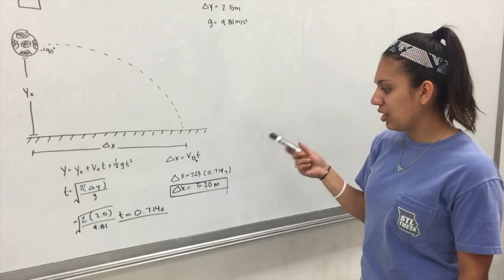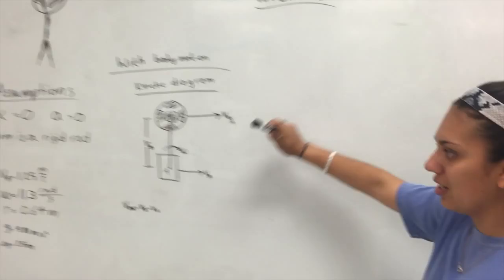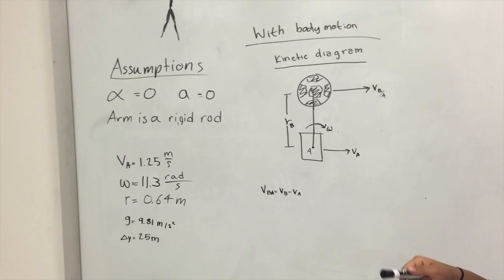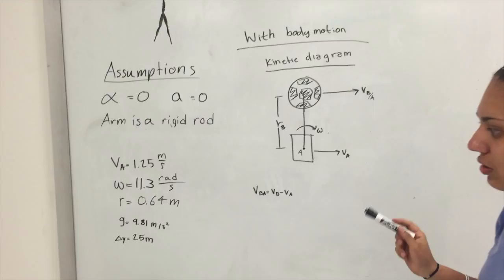When the body is in motion, we can have the same assumptions, except that VA equals 1.25, which is the velocity of the person stepping forward. Omega is still 11.3, R is still 0.64, G is still 9.81, and delta Y is still 1.25 meters.